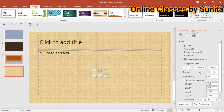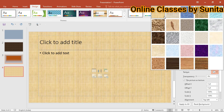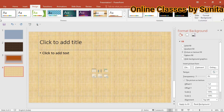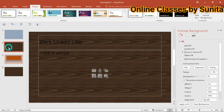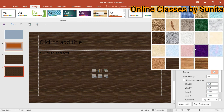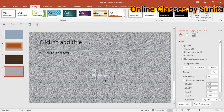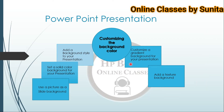यहाँ पर textures show हो रही हैं। Arrow पर click करोगे तो different types के textures आपके पास show हो जाएंगे। जो भी texture आपने use करना है वो use कर सकते हैं। यह देखिए — दोनों slides का background same है, यानि हमने texture apply किया है। Got it?